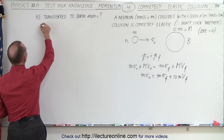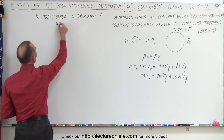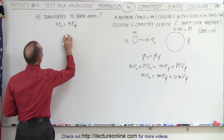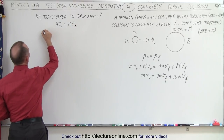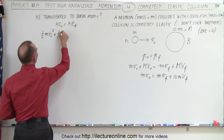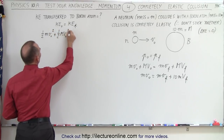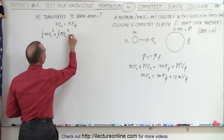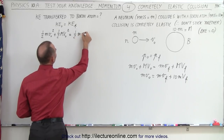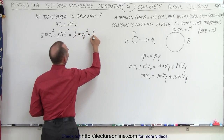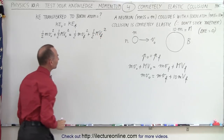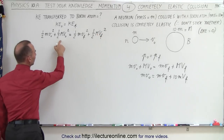The energy conservation equation means kinetic energy initial equals kinetic energy final. That gives us one half M·V_initial² plus one half big M·V_initial² — which is going to be zero — equals one half M·V_final² plus one half big M·V_final².